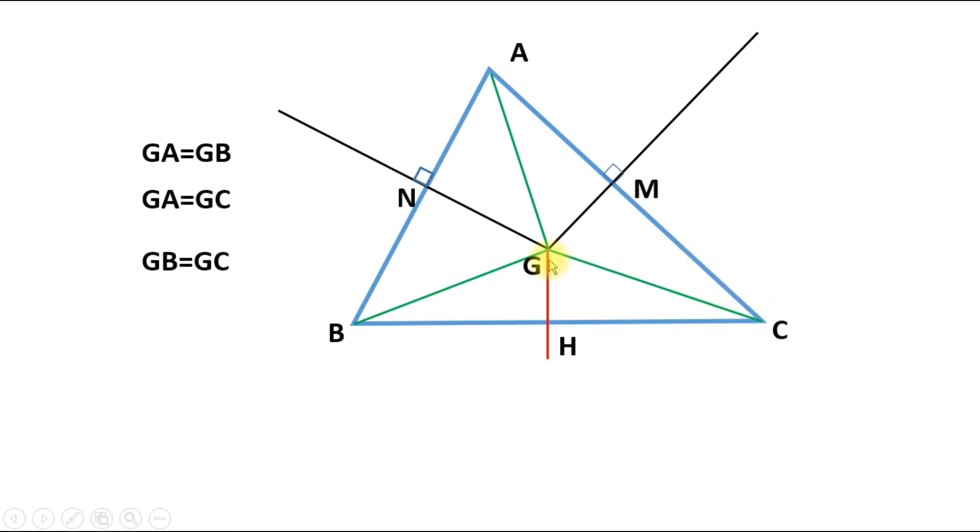Now if we look at these two triangles GHC and GHB, we have chosen HC and BH to be congruent because they are the same length because we chose H to be the midpoint. The length GC and the length GB are equal because we have just deduced that and GH is common between the two. So these two triangles will be congruent.